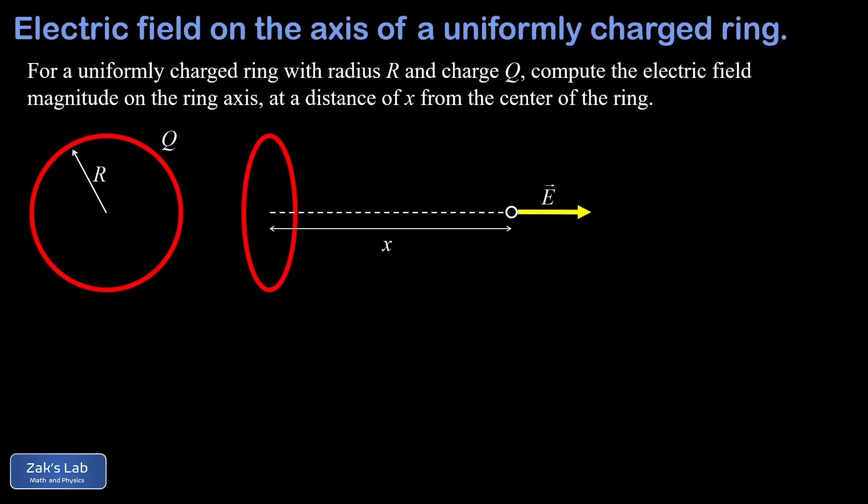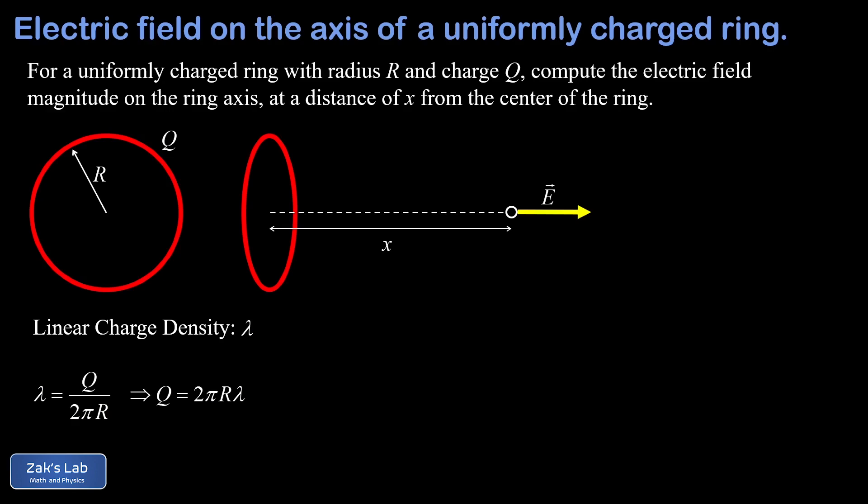Before we begin setting things up, we need a quick note on the linear charge density, which we usually call lambda. The linear charge density is the charge per unit length, measured in coulombs per meter. So the linear charge density of this ring is Q over 2πR, since the length of the ring is the circumference 2πR. We can also say the total charge Q is given by 2π R times lambda. We can always find charge by multiplying linear charge density by length.